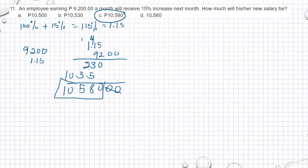Another way to solve this is you take 15 percent of 9,200. That means 9,200 times 0.15, or we have 92 times 0.15. That's all right to multiply.